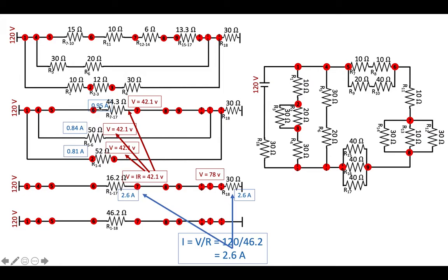But I do note that the one on top there for resistors 7 through 17 is actually four resistors in series. So that 0.95 amps goes to all of those in series.